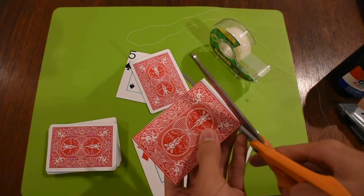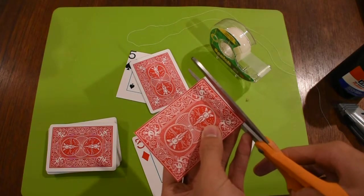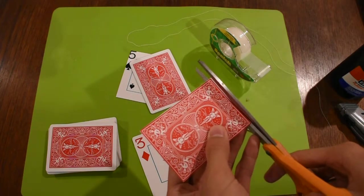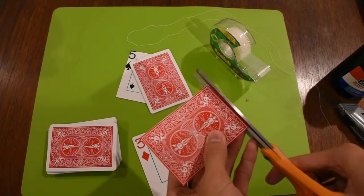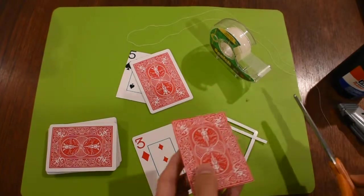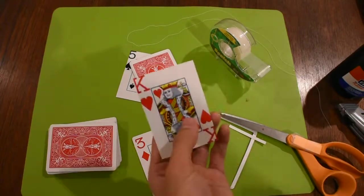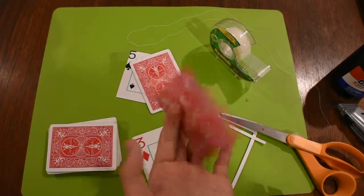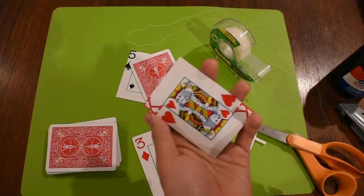One second, let's cut this off. So ideally you'll have a red border. You can just say this is a bridge sized bicycle card. And if anybody asks.